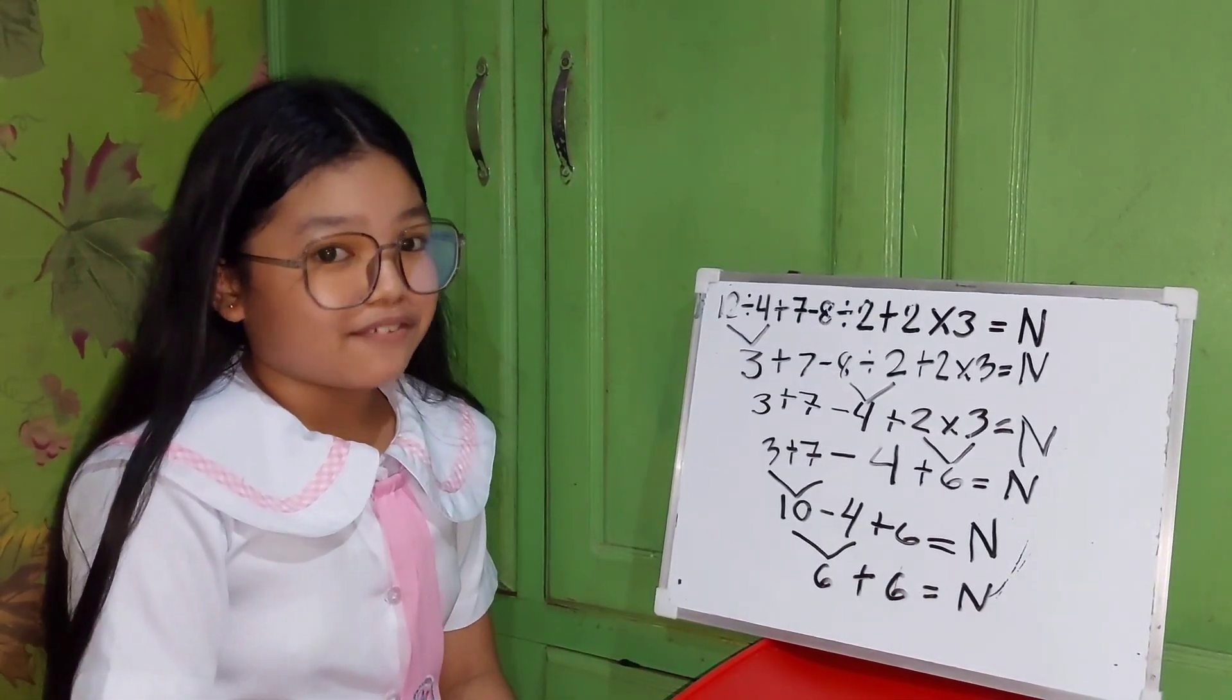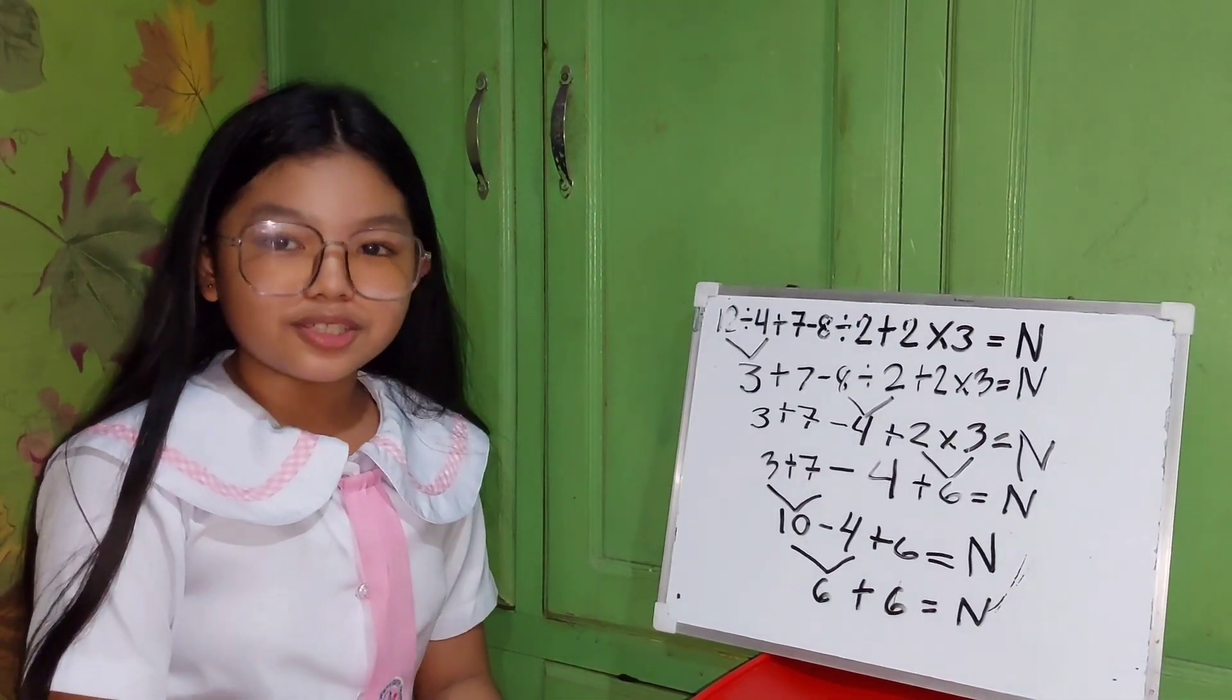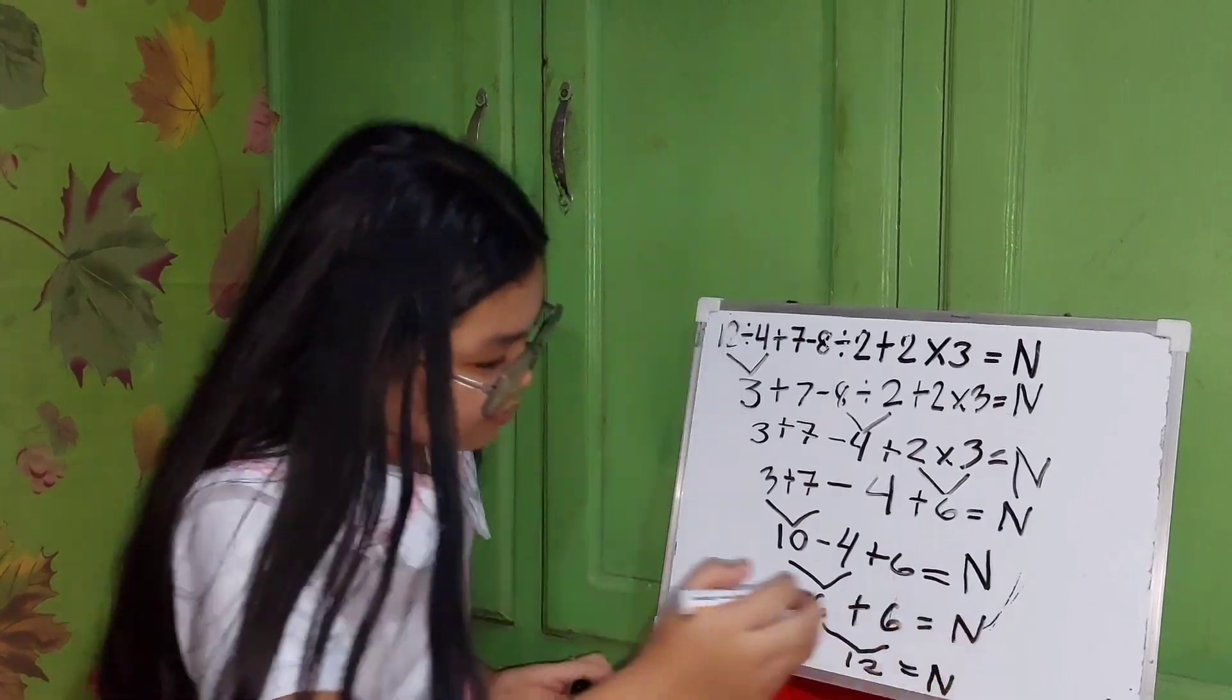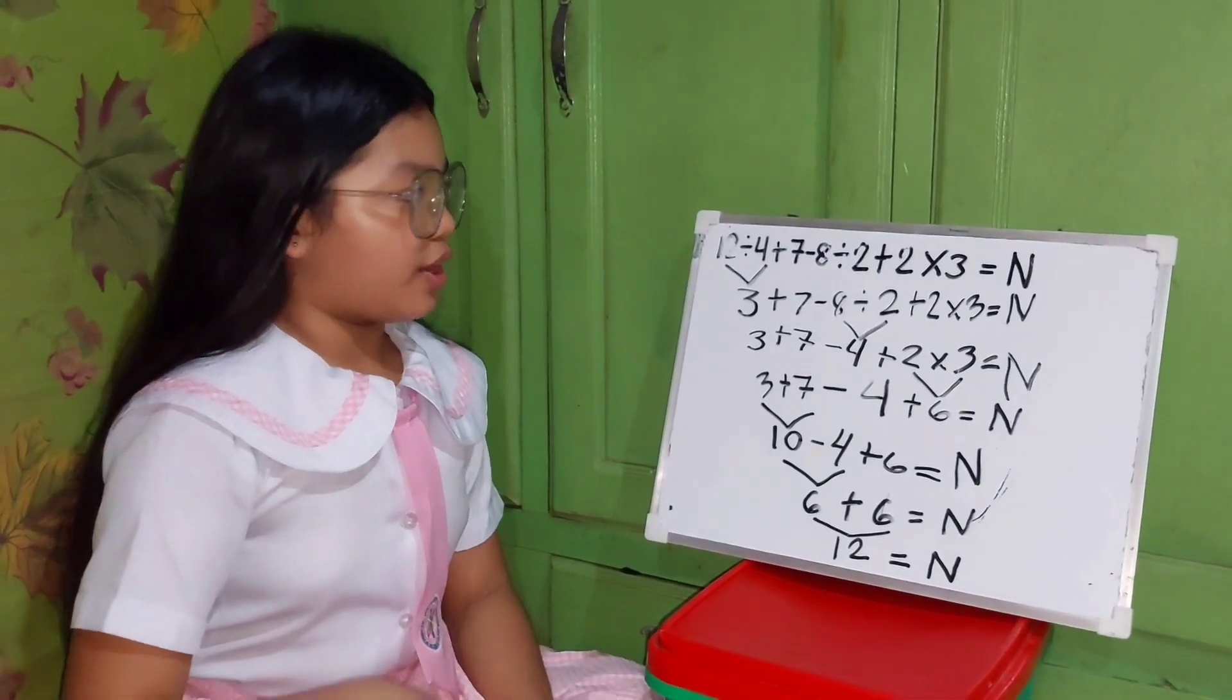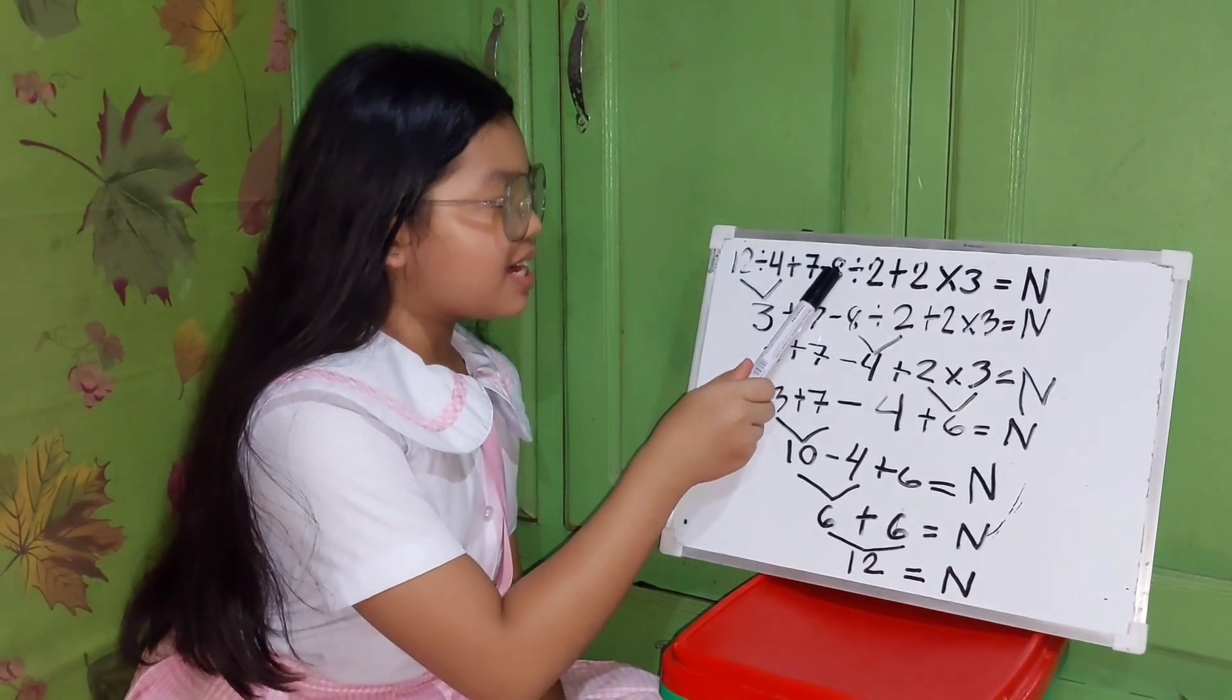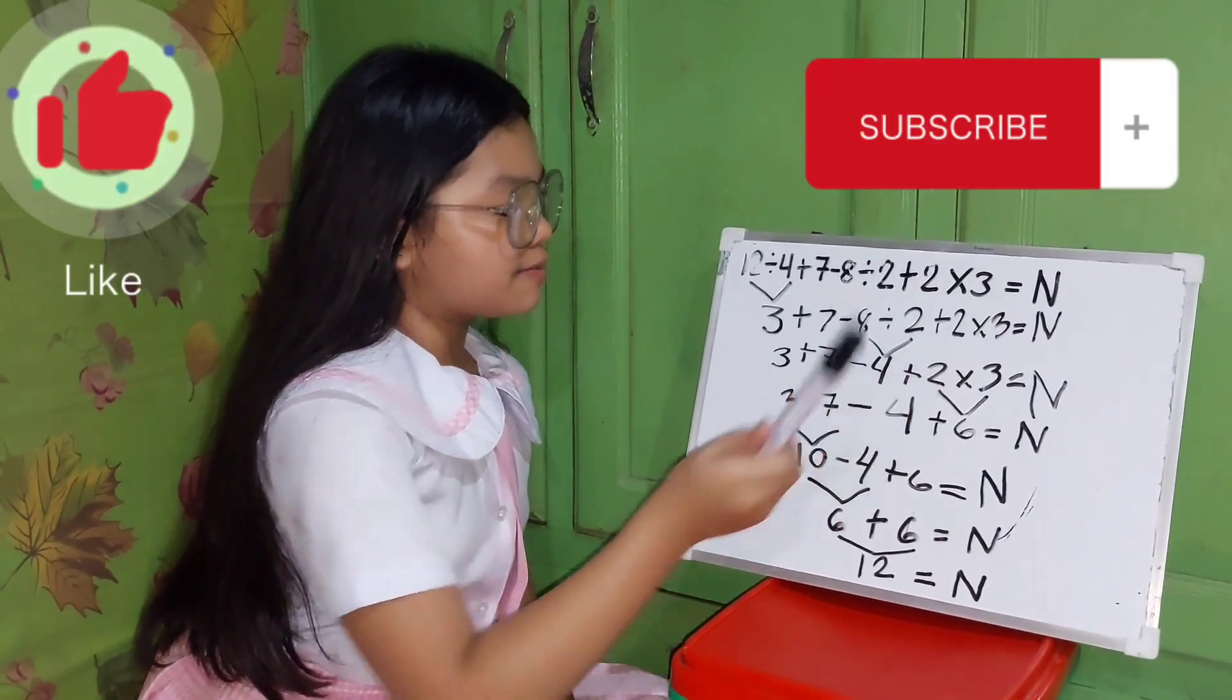The last thing we have to do is add 6 plus 6. 6 plus 6 equals 12. Therefore, 12 divided by 4 plus 7 minus 8 divided by 2 plus 2 times 3 equals 12.